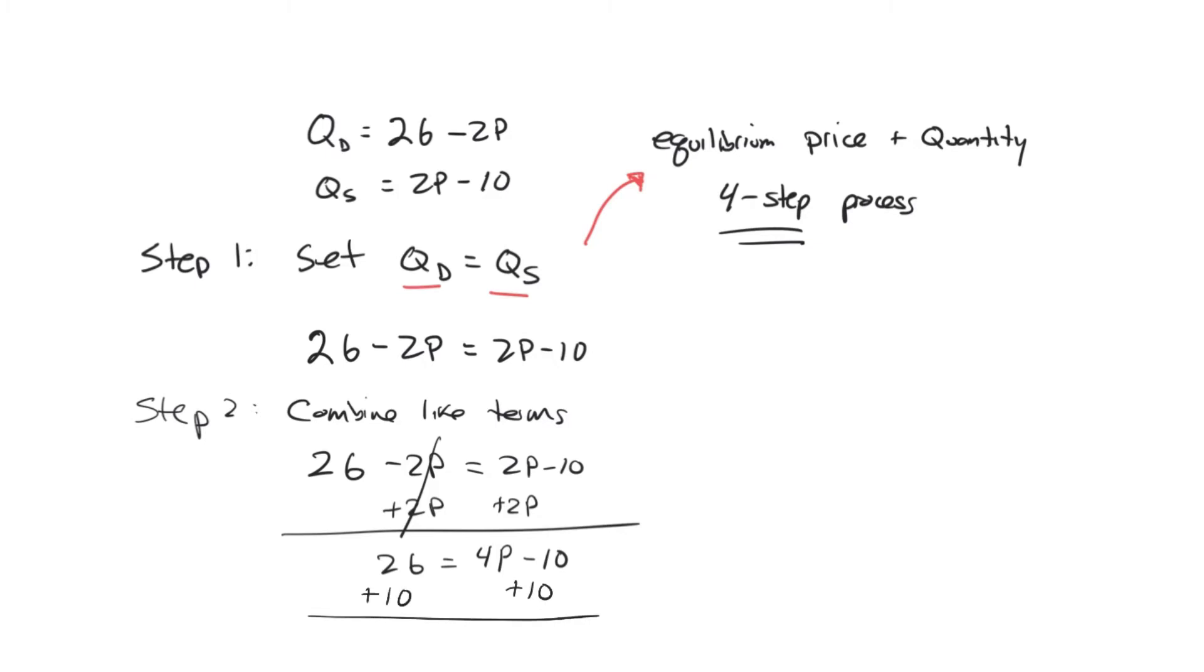We add 10 to both sides. And now on the left hand side, we have 26 plus 10 is 36. And on the right hand side, we have 4P minus 10 plus 10, so those 10s will cancel. We're left with 4P.